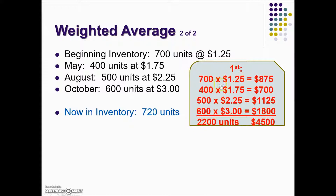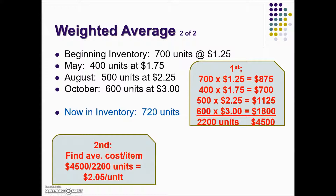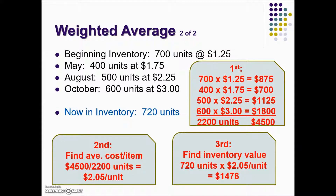Multiplying the price per unit times the number of units purchased gives us our total cost. Next, we want to find the average cost per item, so we take our total expenditure divided by the number of units purchased. This gives us a weighted average of $2.05 per unit, and the inventory value will be the number of units currently in inventory multiplied by the average cost per item, giving an inventory value of $1,476.